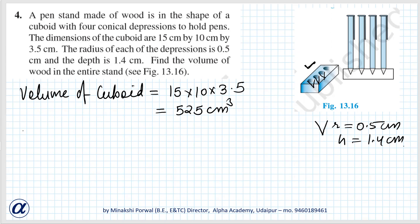Now, volume of wood taken out to make four cavities. These four cavities should be subtracted from the volume of cuboid. First of all, we will find the volume of four cavities.